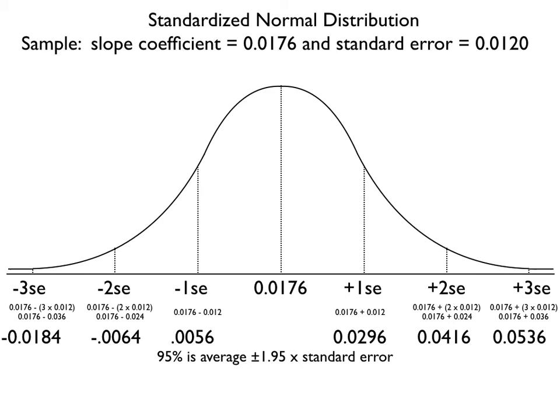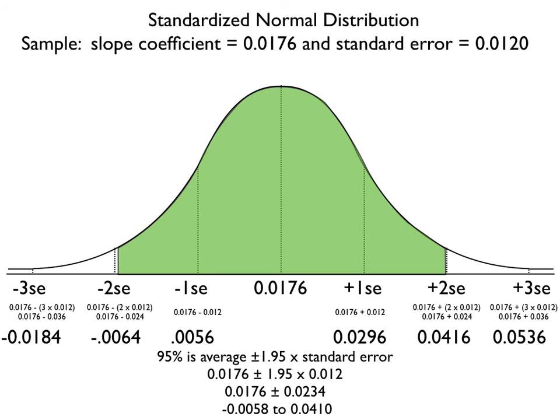Looking at our tables, exactly 95% of the area is plus or minus 1.95 standard deviations times the standard error. In this case, it's 0.0176 plus or minus 1.95 times the standard error. So we get 0.0176 plus or minus 0.0234, which gives us a range from minus 0.0058 to 0.0410. We can see what that area looks like.